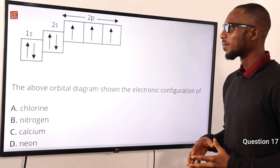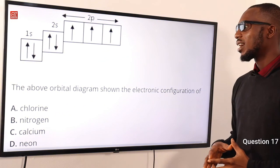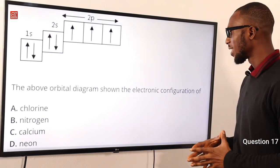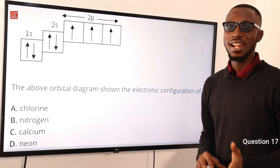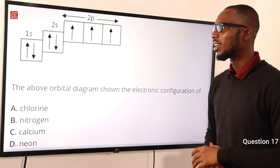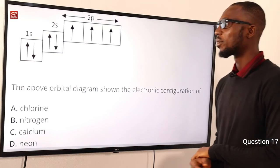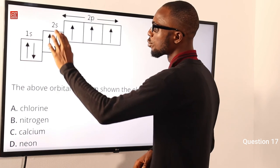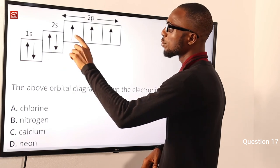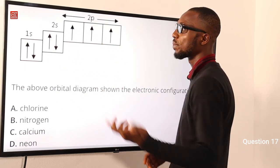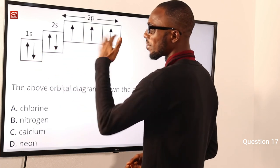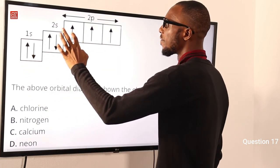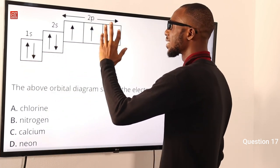Number 17. The orbital diagram shows the electronic configuration of what element? Looking through this configuration we have 1s², 2s², 2p¹, 2p², 2p³. When you add up all of these electrons: 1, 2, 3, 4, 5, 6, 7.